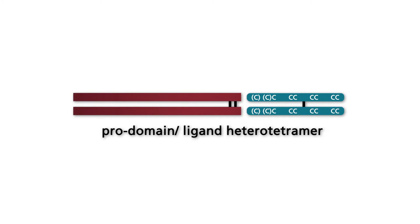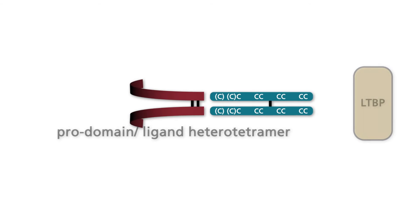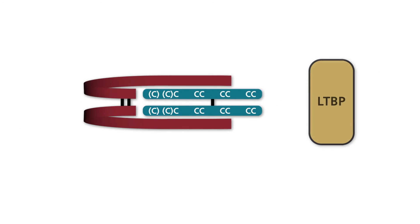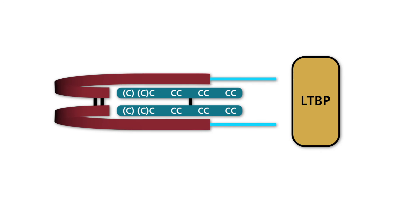Via a disulfide bond, the latency-associated protein binds to the latent TGF beta binding protein, LTBP for short. The complex of mature TGF beta, latency-associated protein, and latent TGF beta binding protein is deposited in the extracellular matrix.